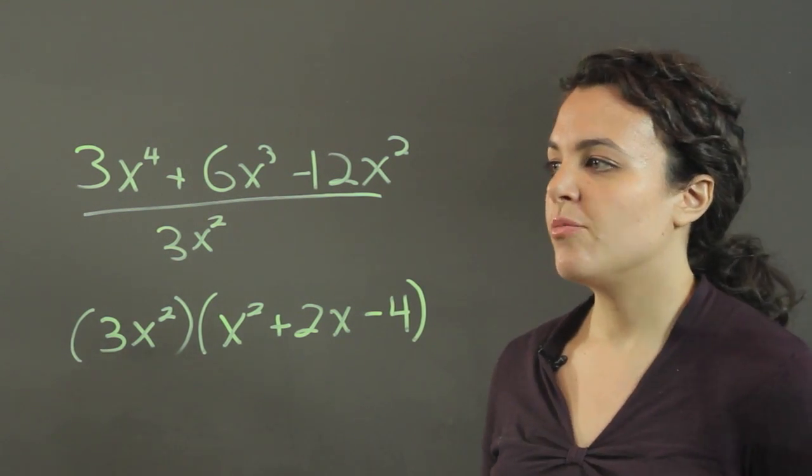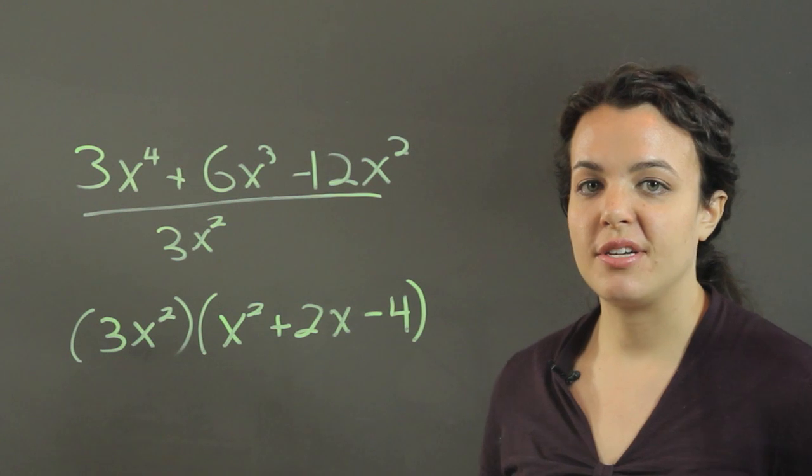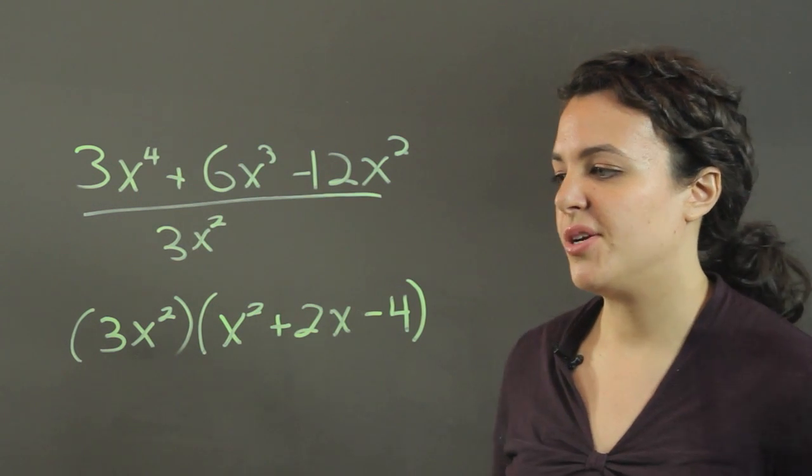So basically, when you want to factor out a monomial, your monomial that you're pulling out is going to be the greatest common factor that you can pull out of each term in your polynomial.